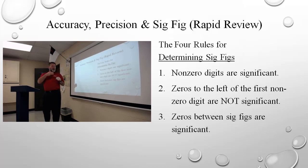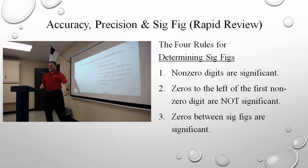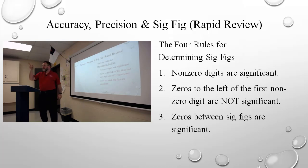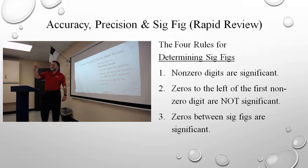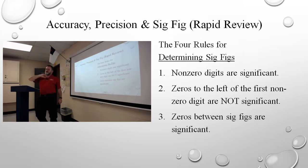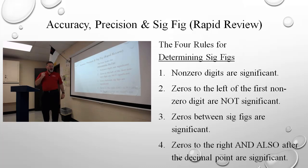Three of these four rules are determining what is significant. Only one of them is telling you what is not significant. What's the last one? Look to the right of the decimal point — trailing zeros at the very end. Any zeros at the end, they are significant.